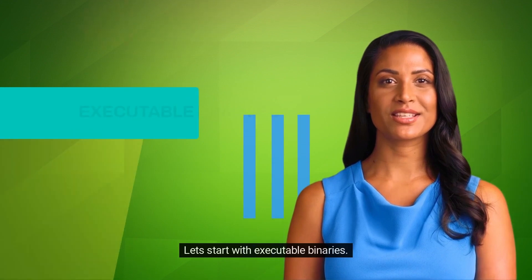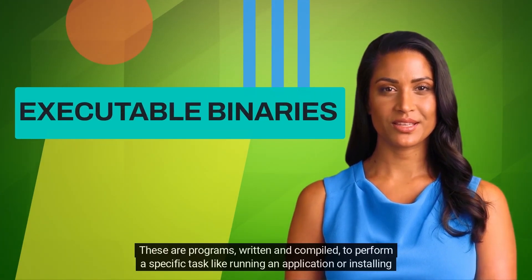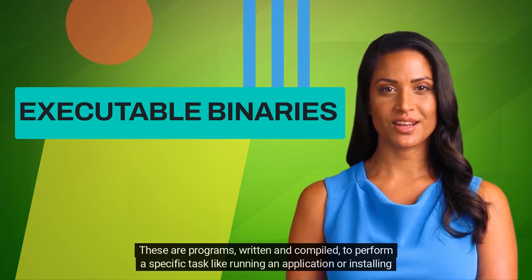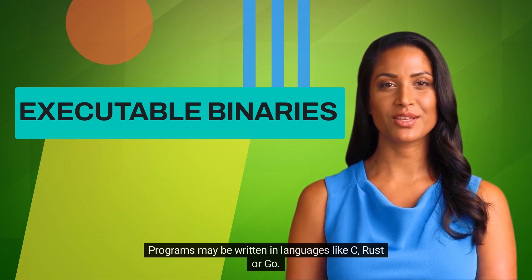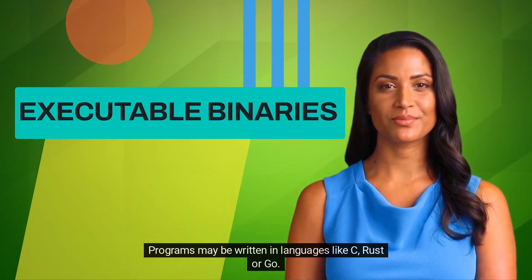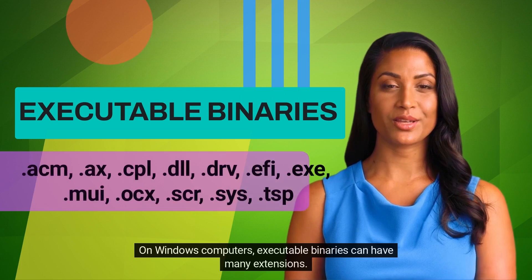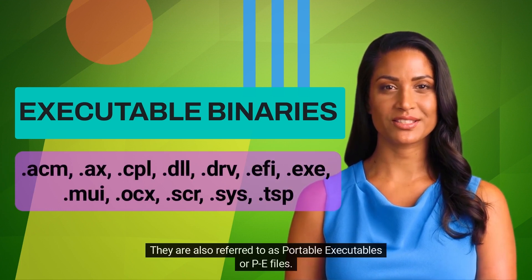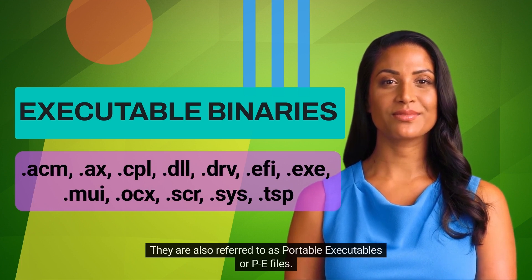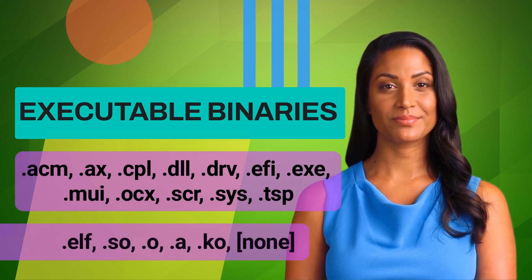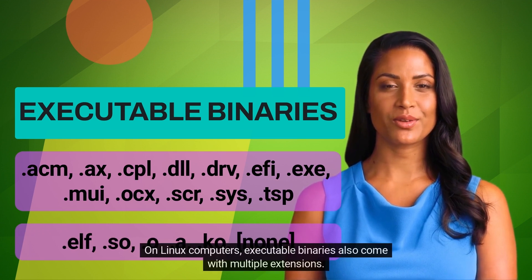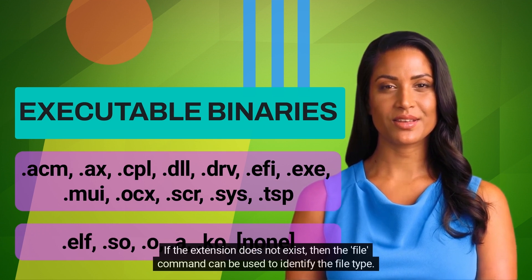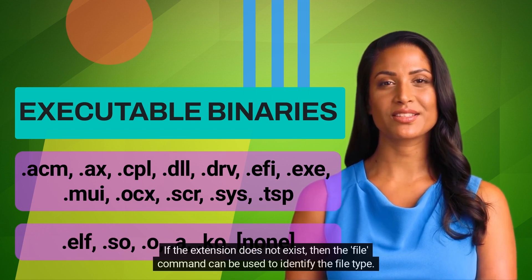Let's start with executable binaries. These are programs written and compiled to perform a specific task like running an application or installing software. Programs may be written in languages like C, Rust, or Go. On Windows computers, executable binaries can have many extensions. They are also referred to as portable executables or PE files. The most well-known one is EXE. On Linux computers, executable binaries also come with multiple extensions. If the extension does not exist, the file command can be used to identify the file type.